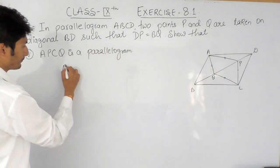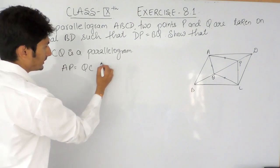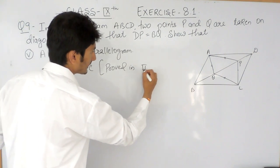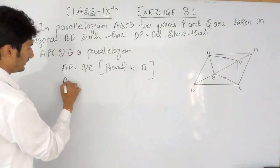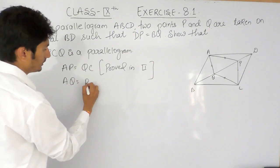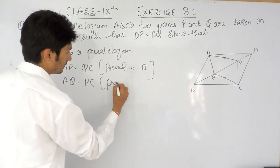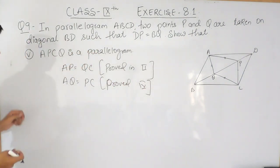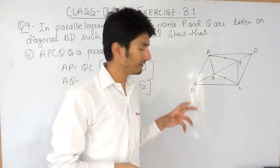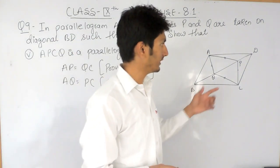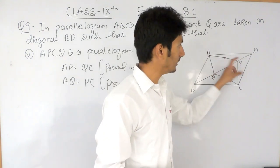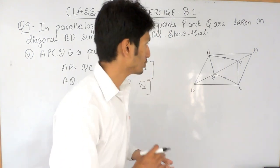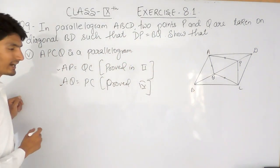AP is equals to QC proved in the second part and AQ is equals to PC, this is again proved in the fourth part. Now if in a closed figure, in a four-sided closed figure, if opposite sides are equal, then that closed figure is known as a parallelogram.